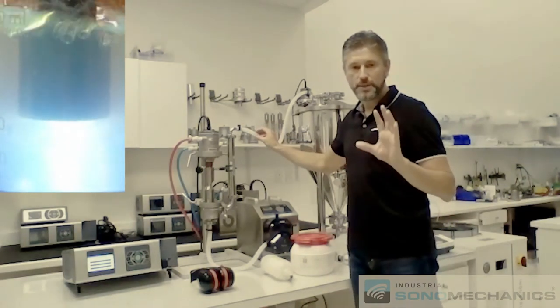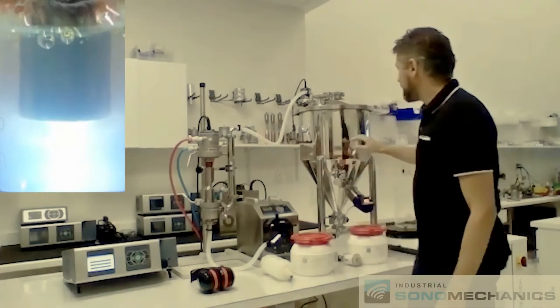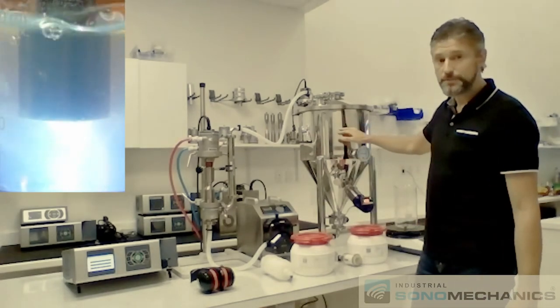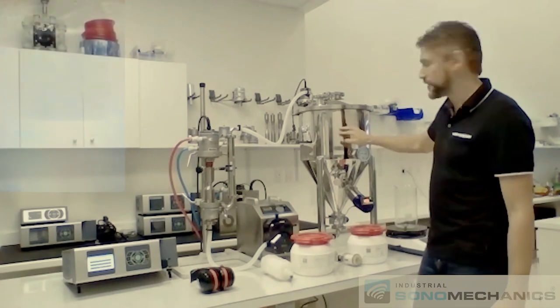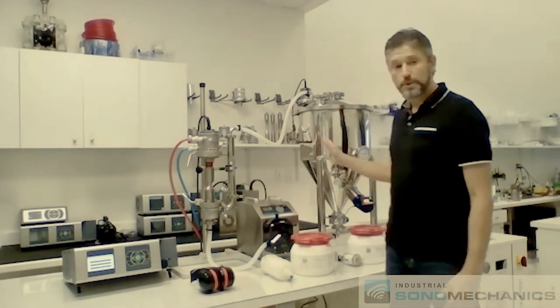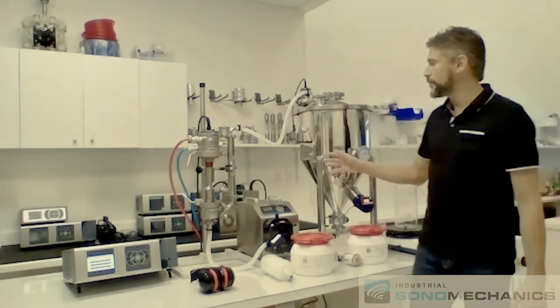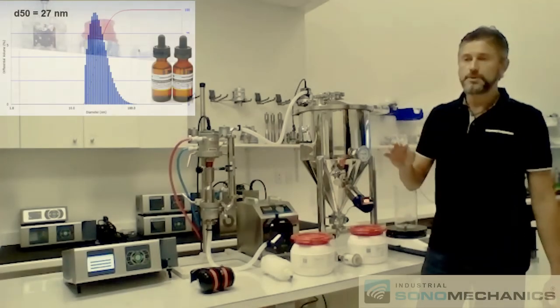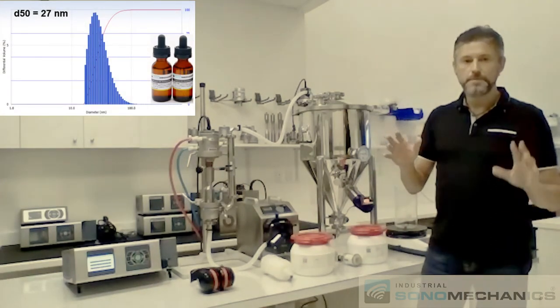that typically means that the process is done and you should expect to be able to process approximately 20 liters of nanoemulsion in one hour with the system, which is about half the tank. This is a 50 liter tank. And at the end of this process, when everything is done, you can expect a nanoemulsion with the droplet size, median droplet size of approximately 25 to 30 nanometers.